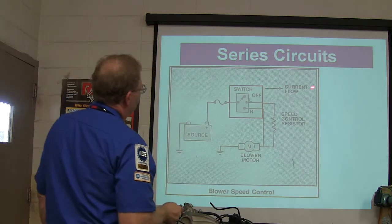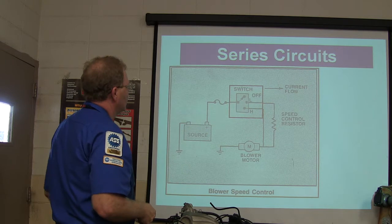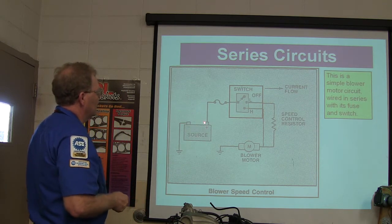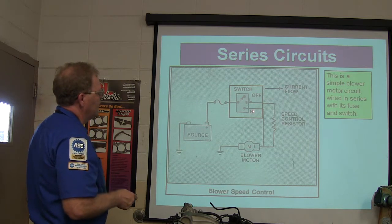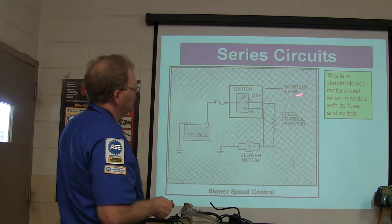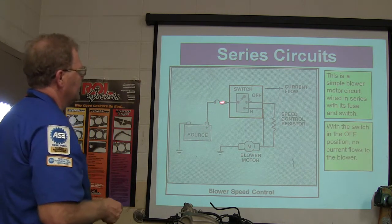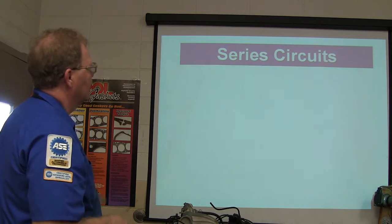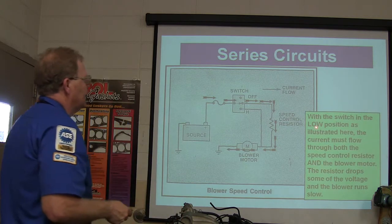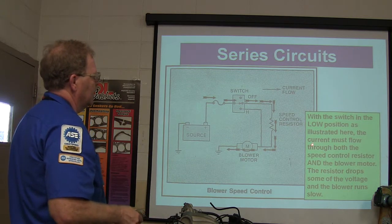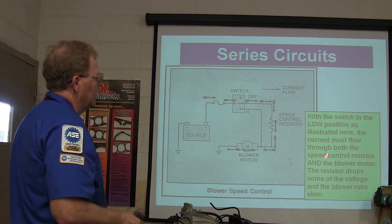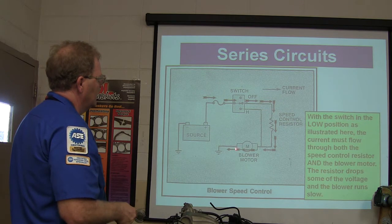Here's one of the blower speed controls — it's wired in series with its fuse and its switch. Going through the fuse, through the switch, you've got a speed control resistor that's part of the series circuit and a blower motor. With the switch in the off position, no current flows because it can't get there. With the switch in the low position, current has to flow through the speed control resistor and the blower motor — the resistor drops some of the voltage and the blower runs slow.